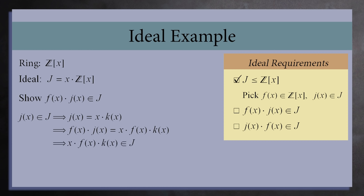And this is in j, because by definition, x times any polynomial in our ring is in j. So the set j is an ideal.